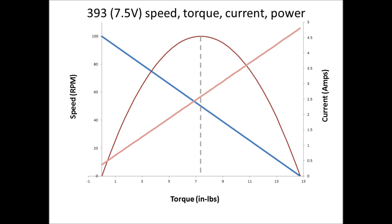The mechanical power output of the motor is equal to the torque multiplied by the rotational speed. That means that the maximum power output is where the speed is half of the maximum and the torque is half of the maximum. At 7.5 volts that is 7.4 inch pounds of torque at 50 RPM. This is where VEX motors perform at their best in terms of simple energy output.